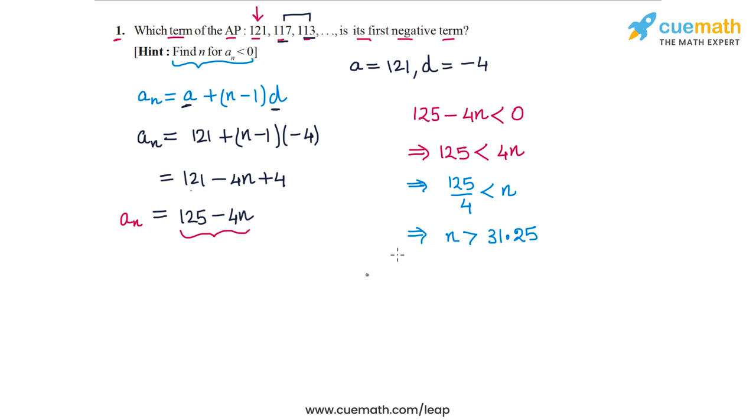So if n is greater than 31.25, then this inequality will hold true or 125 minus 4n will be less than 0. So the first integer value of n for which n is greater than 31.25 is n equal to 32. So if n is equal to 32, then 125 minus 4n will become negative for the first time.